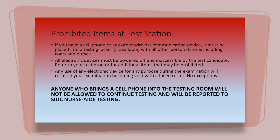There are personal items that are strictly forbidden in the testing center, and specifically at your testing station. If you have a cell phone or any other wireless communication device, it must be placed in a testing locker, if available, with all other personal belongings, including coats and purses. All electronic devices must be powered off and inaccessible by the test candidate. Refer to your test proctor for additional items that may be prohibited. Any use of any electronic device for any purpose during the examination will result in your examination becoming void with a failed result. There are no exceptions to this policy.